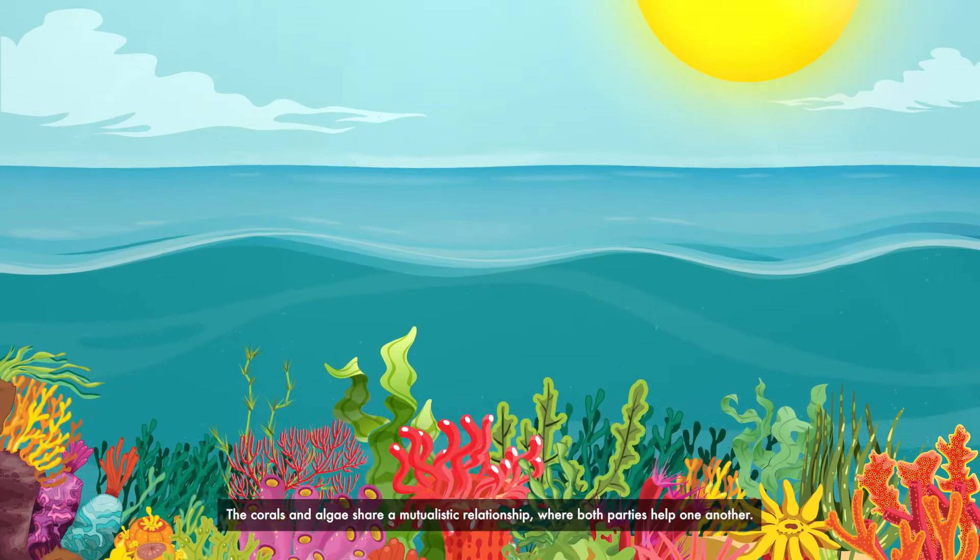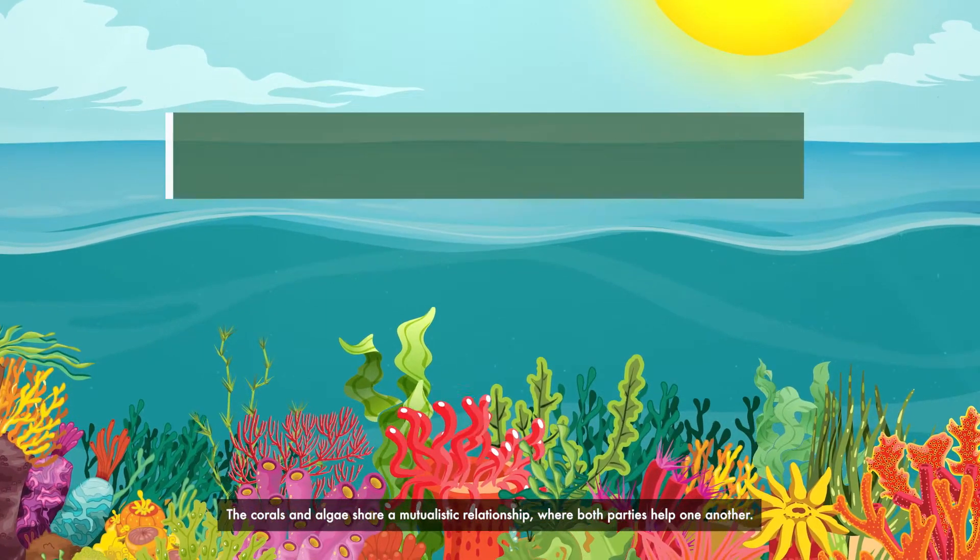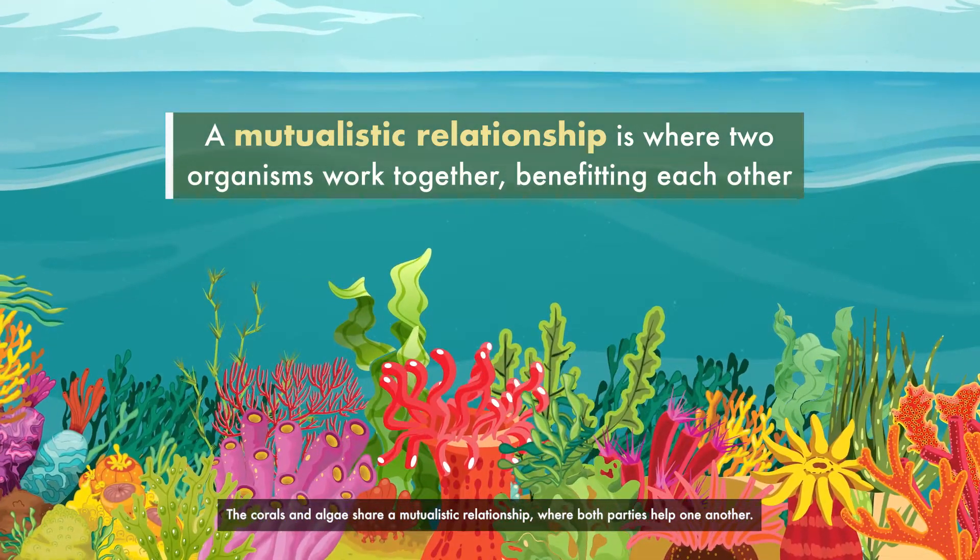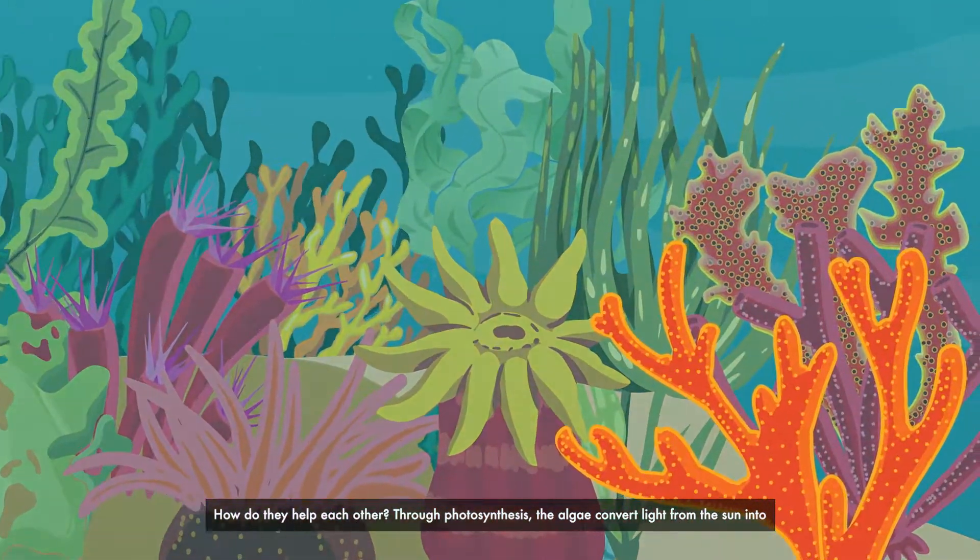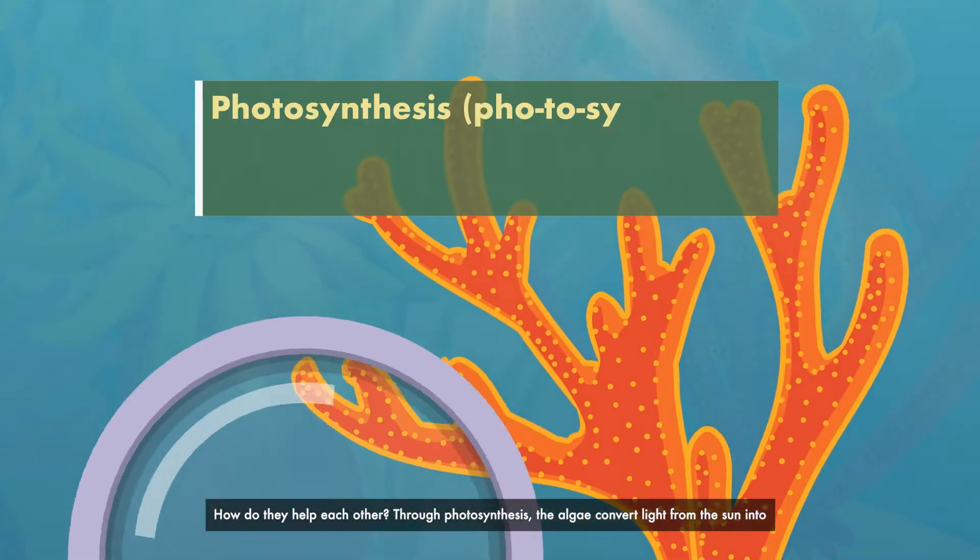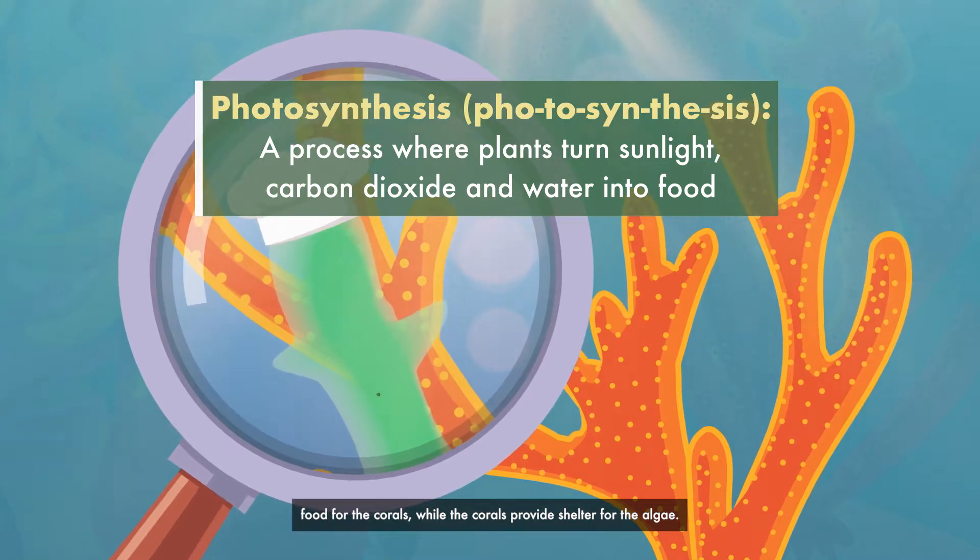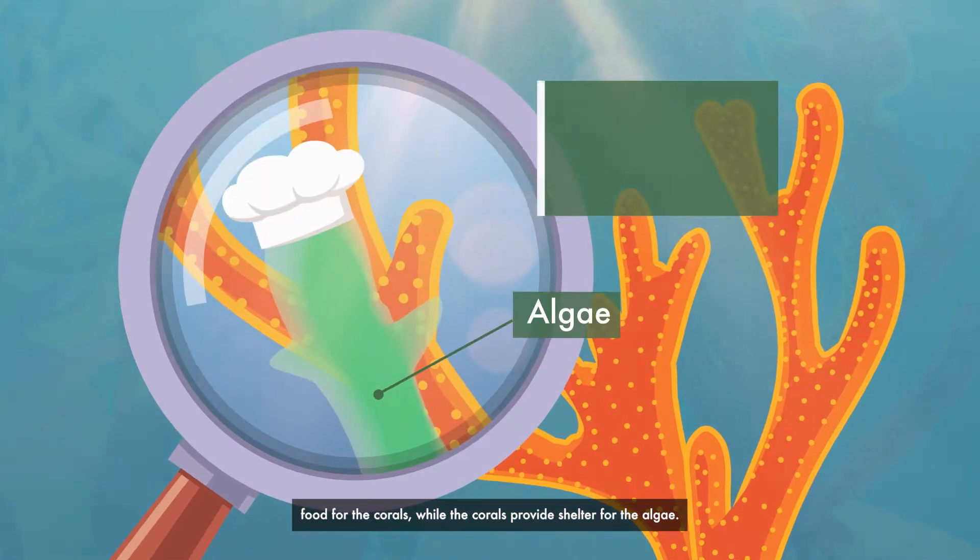The corals and algae share a mutualistic relationship where both parties help one another. How do they help each other? Through photosynthesis, the algae convert light from the sun into food for the corals, while the corals provide shelter for the algae.